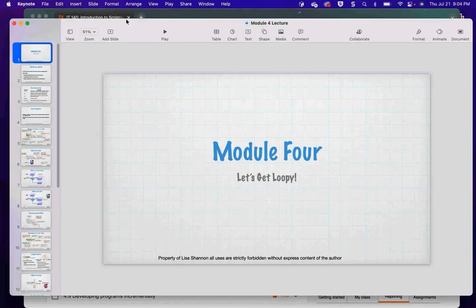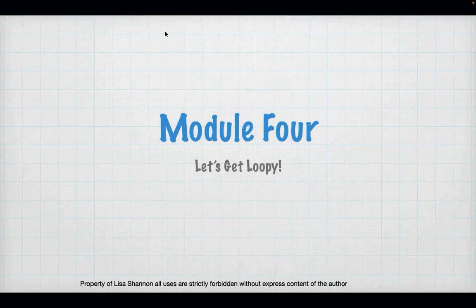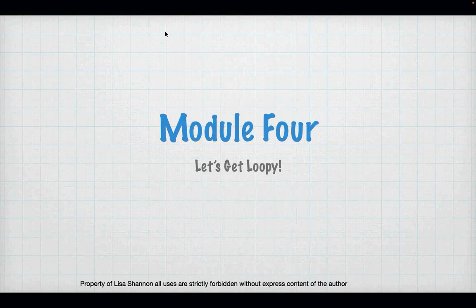Tonight we are talking about loops. This module builds directly from Module 3. In Module 3, we learned how to make decisions. In Module 4, we're learning how to make decisions repeatedly.